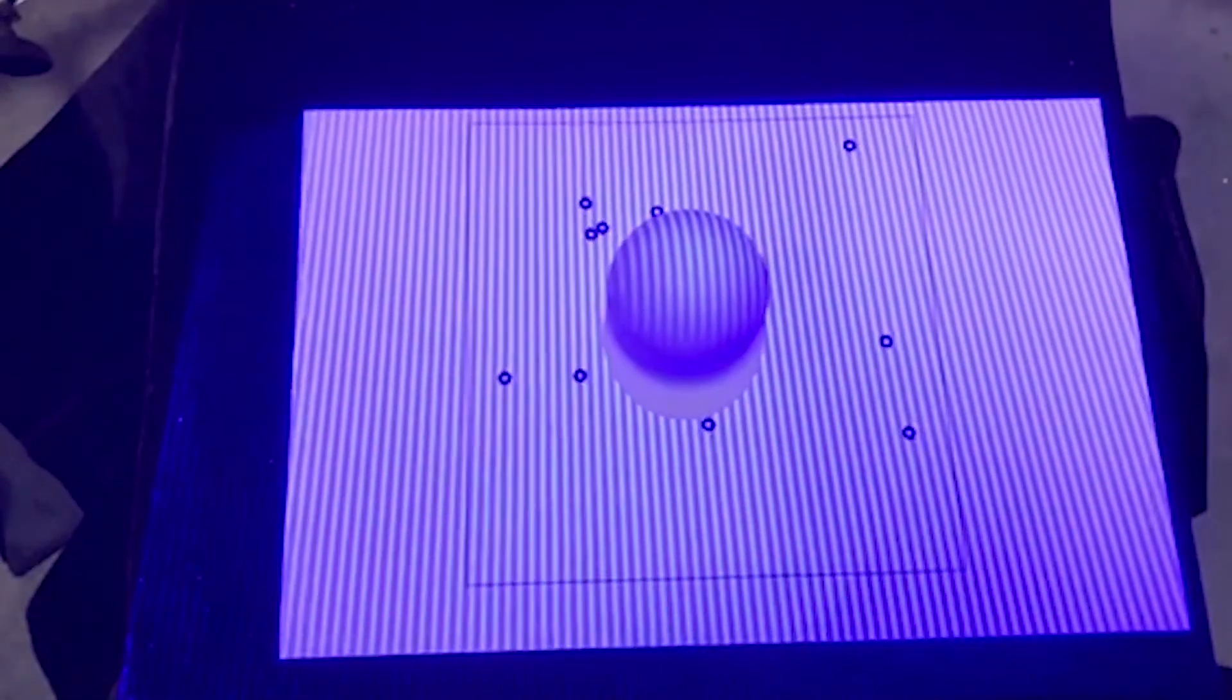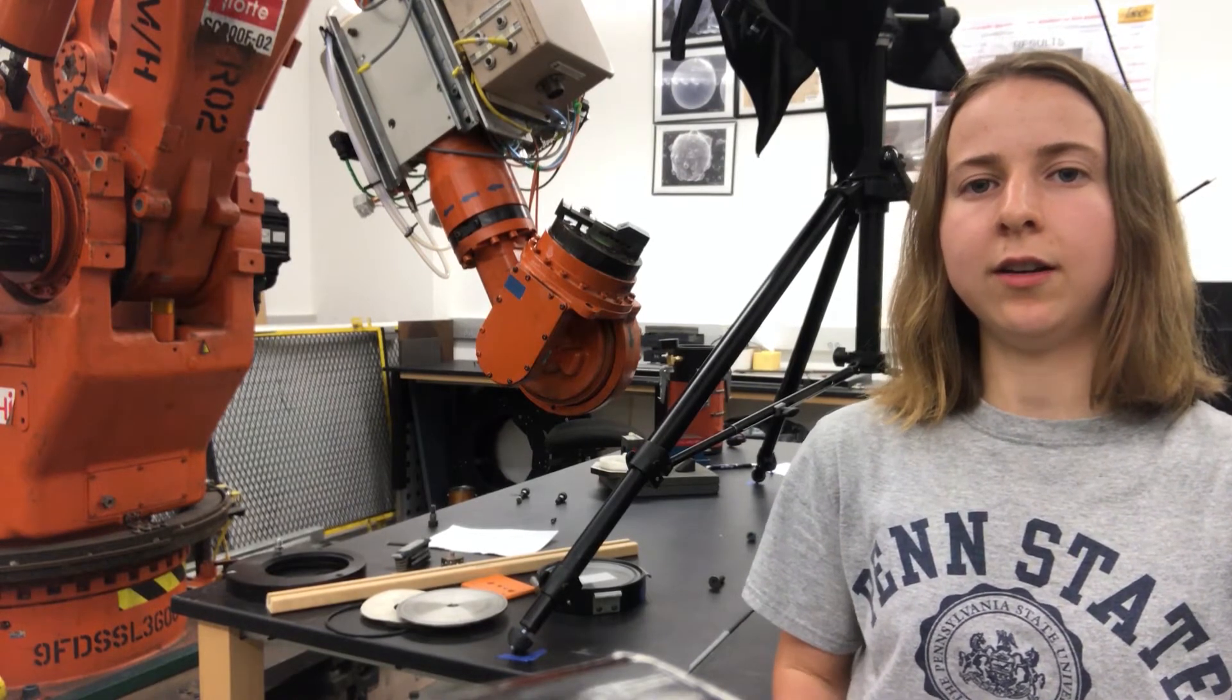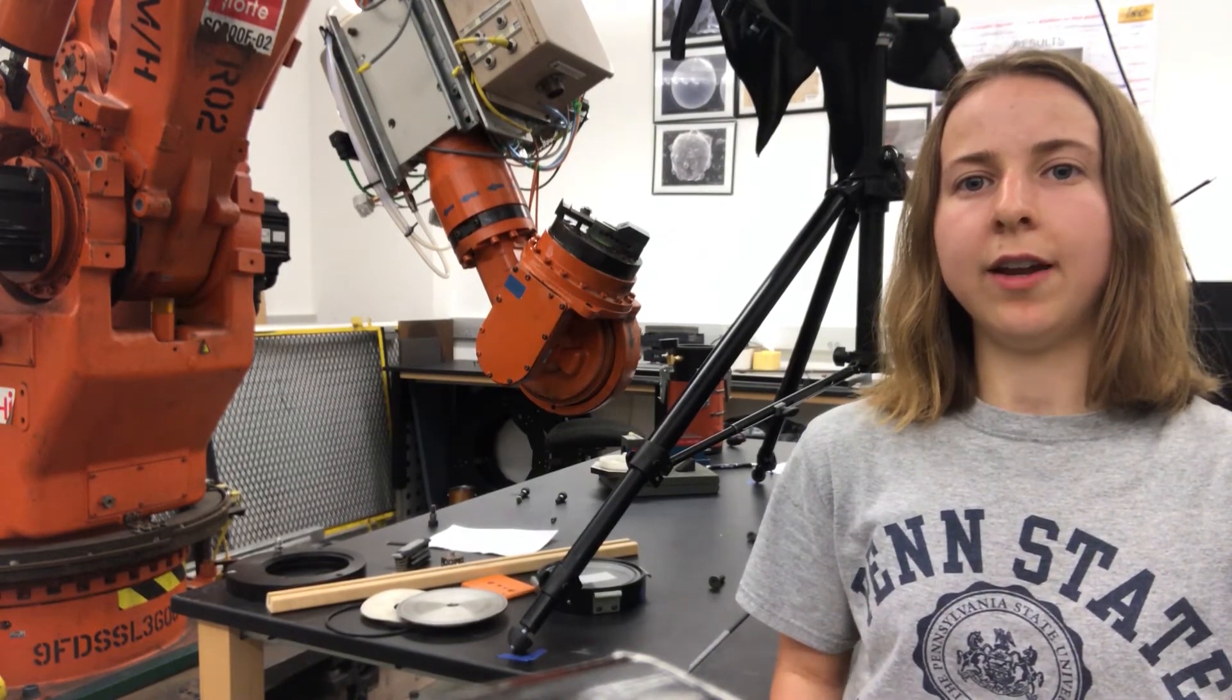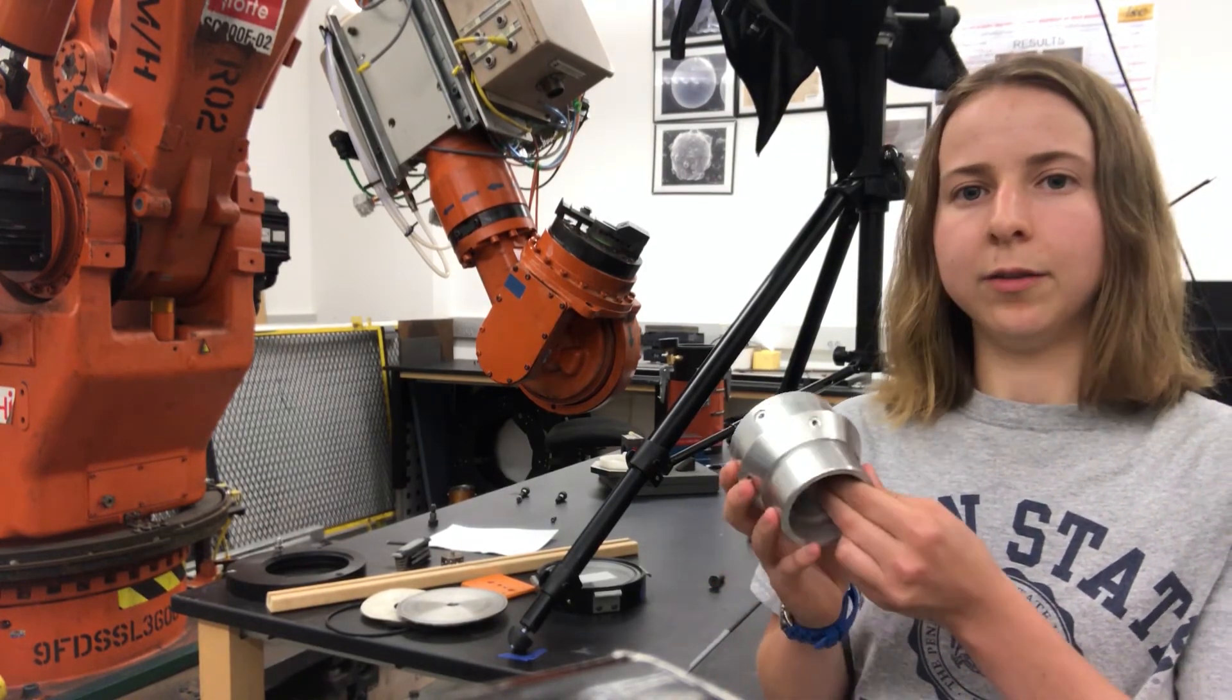The scanner that we have is ideal because it can take a scan in one to two seconds but because it uses light it has a difficult time scanning reflective materials such as this metal part.